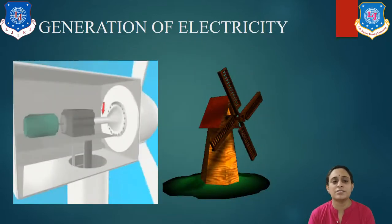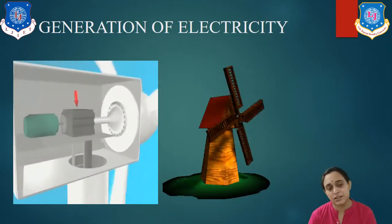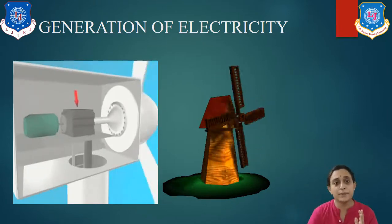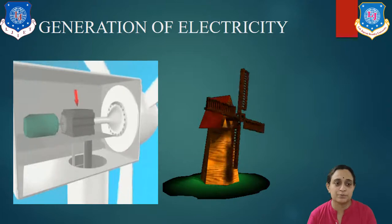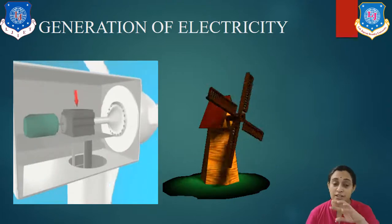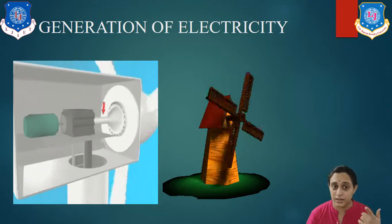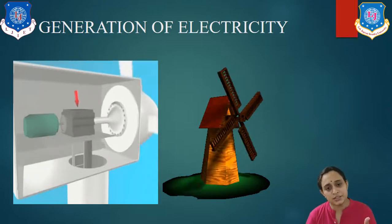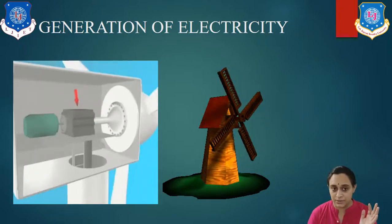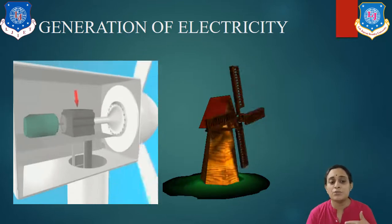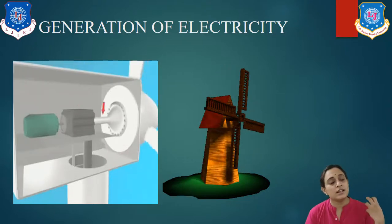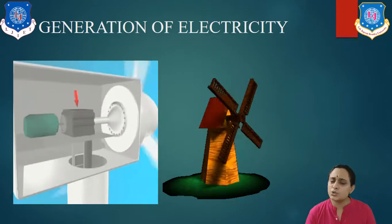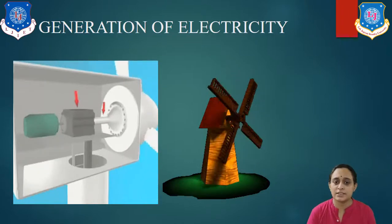Now let us discuss how electricity is generated from the wind turbine. The wind turns the rotor of the wind turbine. Most rotors have three blades, but some new designs carry one or two blades minimum. The rotor turns the generator — by kinetic energy the generator starts rotating. The generator converts the energy of the wind into electricity. As the speed of the wind increases, the amount of wind energy converted into electricity also increases. Electrical cables carry the electricity to households or the national or local grid.